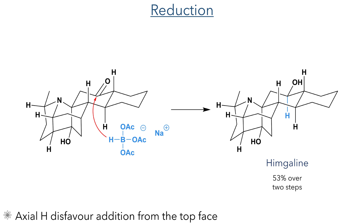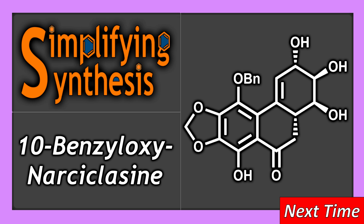Overall, this synthesis is quite impressive as it is a very short route and many of these transformations can be carried out without isolation. Hymgaline can be produced in just seven steps, less than half the number needed than the syntheses which have previously been reported. In the next video we'll look at the total synthesis of 10-benzyloxynarcyclazine.